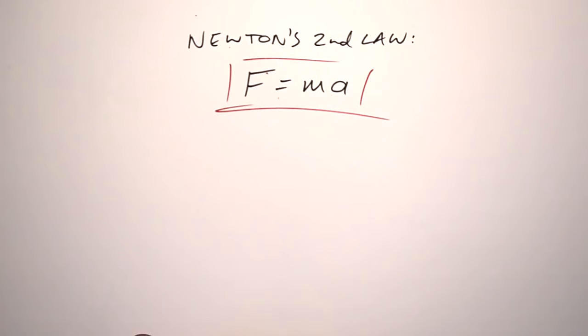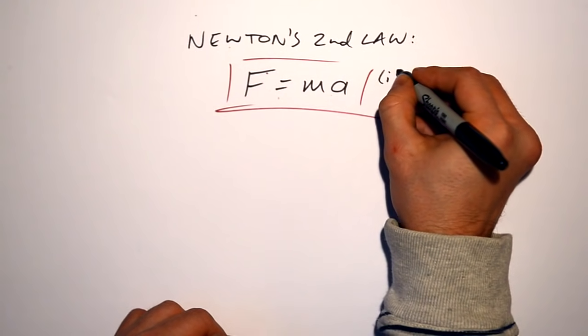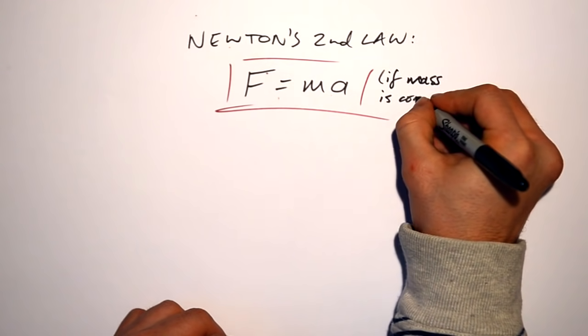Newton's second law is as simple as this here. F equals ma. Force is mass times acceleration. Force in newtons, mass in kilograms, and acceleration in meters per second squared. Now there is a bit of a caveat with this one. We really should put in here as well if mass is constant.